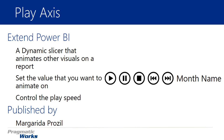One of the things often requested with the play axis — for things like the scatter chart — is the ability to control playback speed, which you don't have a ton of control over with native controls. When you're using the play axis, it actually has the ability to change the speed at which values are iterated over.